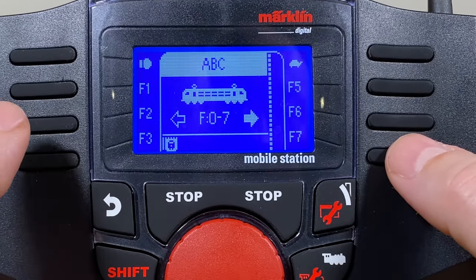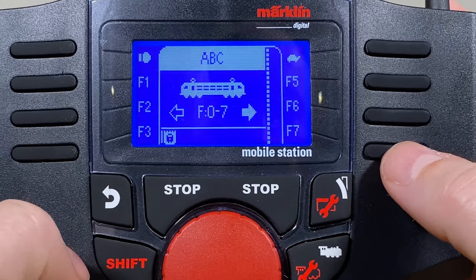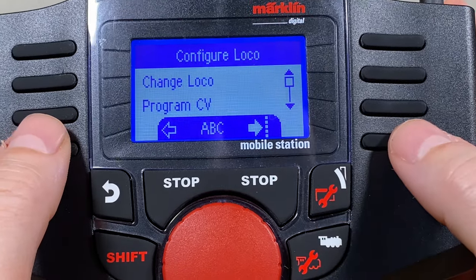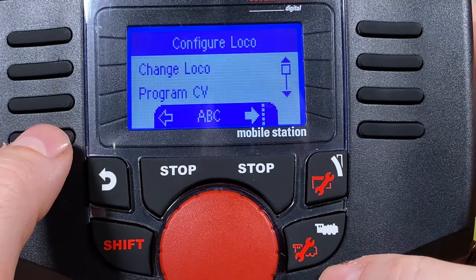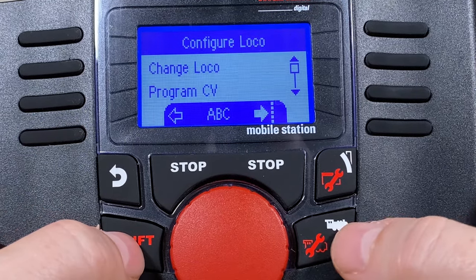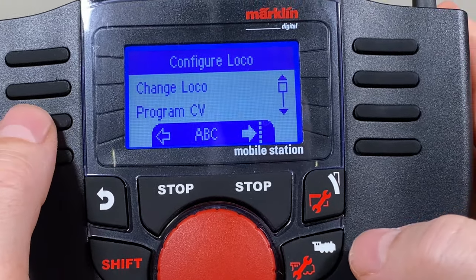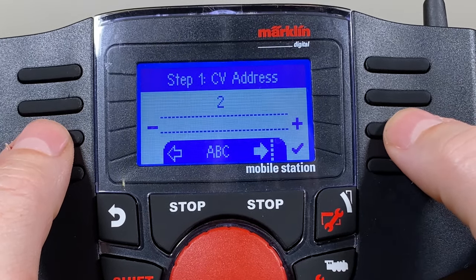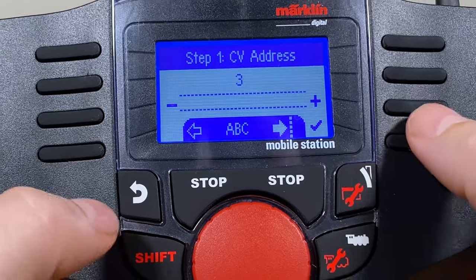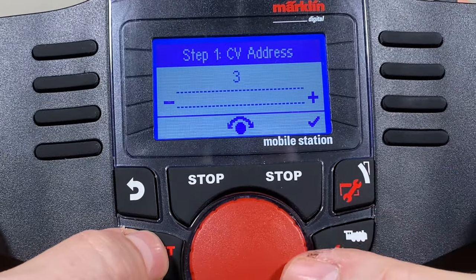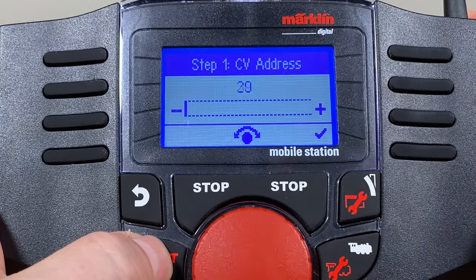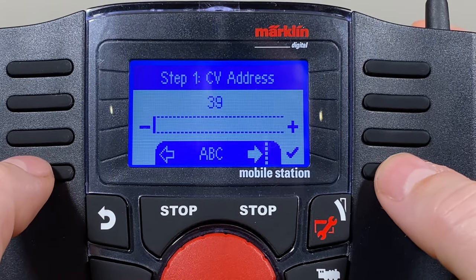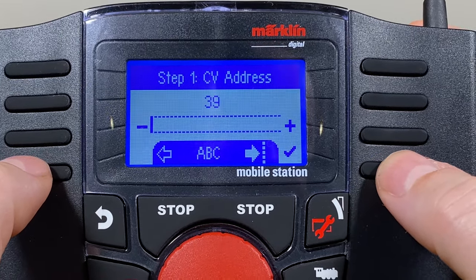We got locomotive here. The only thing I need to do with that really is to hit shift wrench or shift locomotive. I should say down here. Then I can go into program CV. I needed to change address 39. Remember I can use these buttons or I can use the knob as well. So let me go to 39. That's 40. I go one back and now I can hit the check mark.